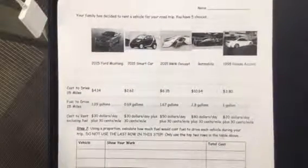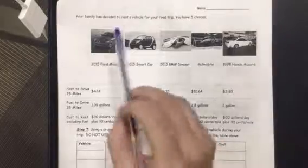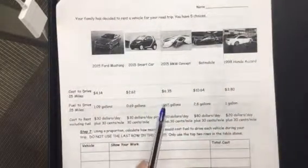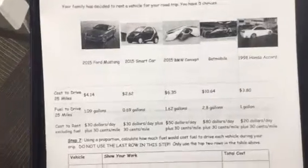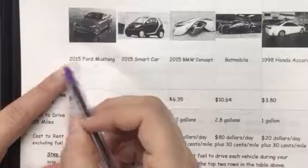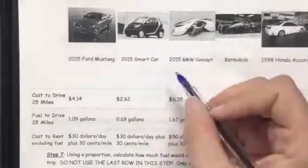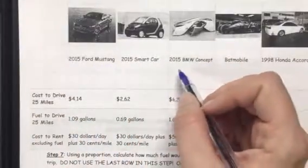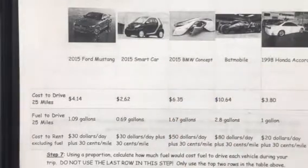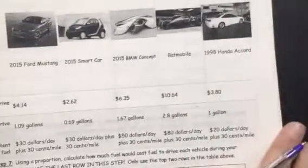The next thing we're going to talk about is renting a car for our trip. Your family has decided to rent a vehicle for your road trip. You have five choices of vehicle: the 2015 Ford Mustang, a 2015 Smart Car, a 2015 BMW Concept, a Batmobile, or a 1998 Honda Accord.